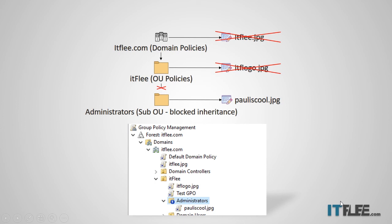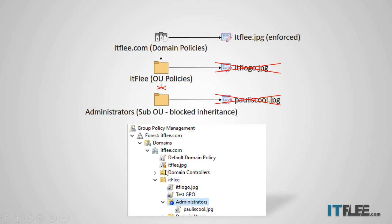Now, what if we enforce ITFly.jpg? You can see the icon has changed — when it shows a lock, that means the GPO is enforced; and the exclamation mark means the GPO is blocking inheritance. What's going to happen in this circumstance is that ITFly.jpg will take precedence because it is an enforced GPO. Remember: local, site, domain, organizational unit, and enforced — and enforced always wins over all of those.